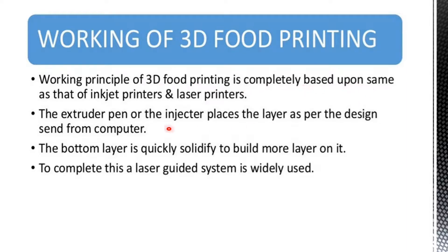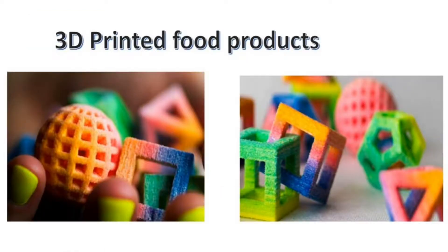The working principle of 3D food printing is completely based on the same concept as inkjet printers and laser printers. The extruder pen or ink injector places the layer as per the design from the computer. The bottom layer is quickly solidified to build more layers on it, and to complete this, a laser-guided system is widely used.